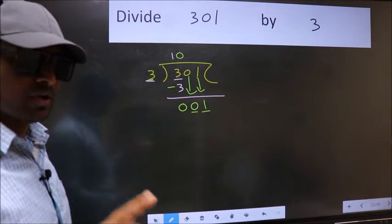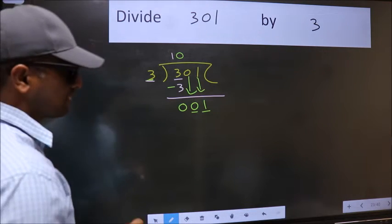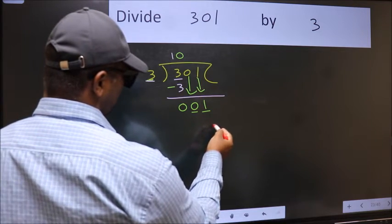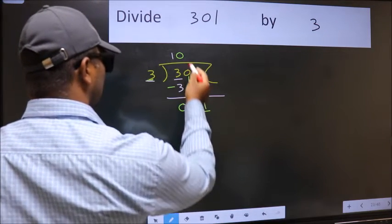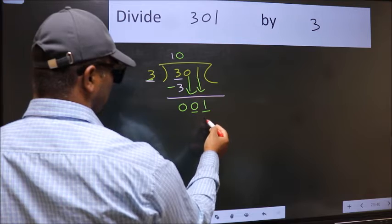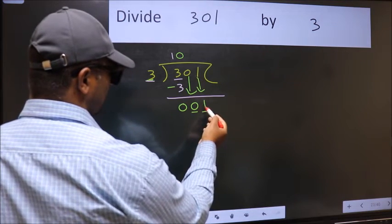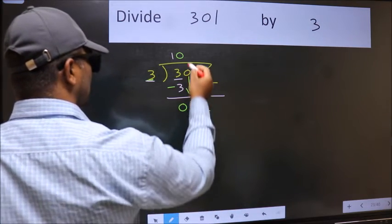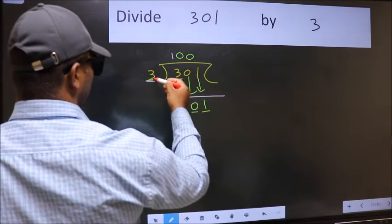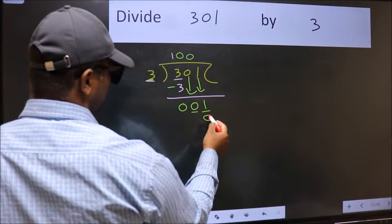Instead, what you should think of doing is which number should we take here. If I take 1, we will get 3. But 3 is larger than 1. So, what we should do is we should take 0. So, 3 into 0, 0.